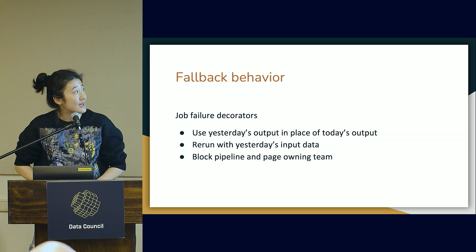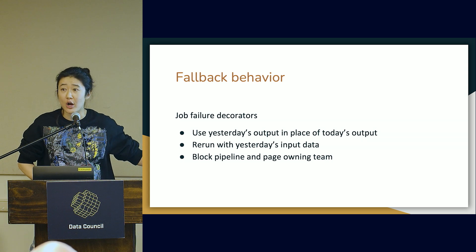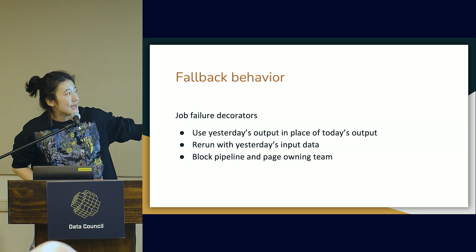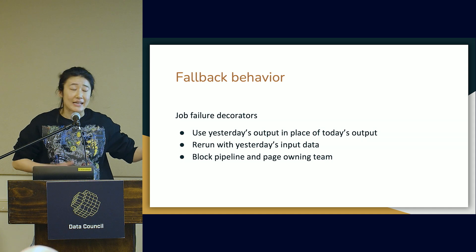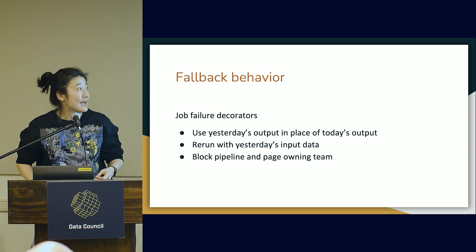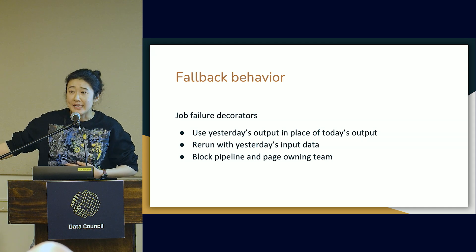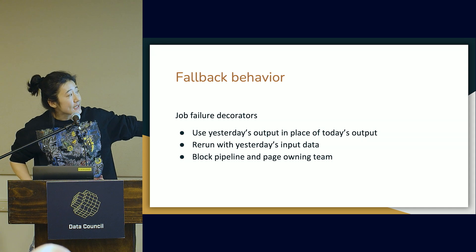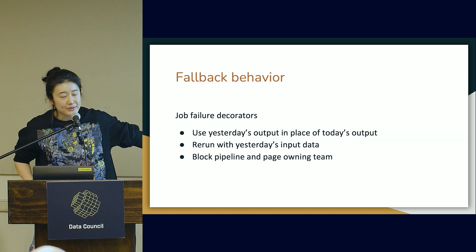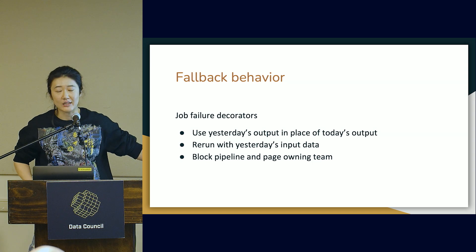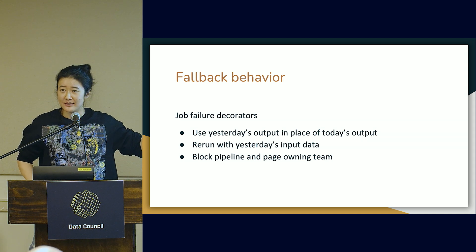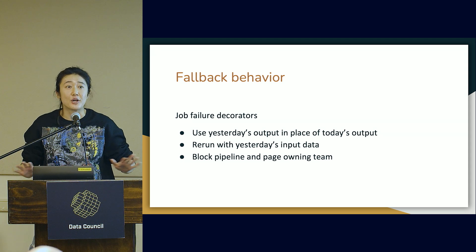Part and parcel with checks is: what do you do when something goes wrong? We have very complex fallback behaviors defined for all of our data jobs. If it's not super critical, the job actually falls back automatically to using yesterday's output — it tries however many times the user defines, and then continues the pipeline with yesterday's output. A step higher than that: maybe something's wonky with today's data, so we use yesterday's data but rerun the pipeline and continue with that. The most severe case is you actually block the pipeline and halt everything, which is marked with a decorator indicating this is critical.